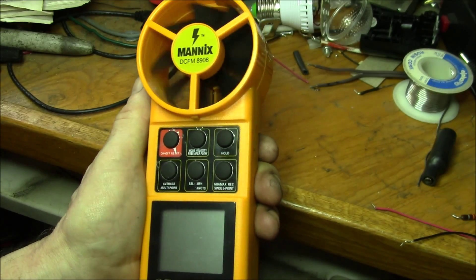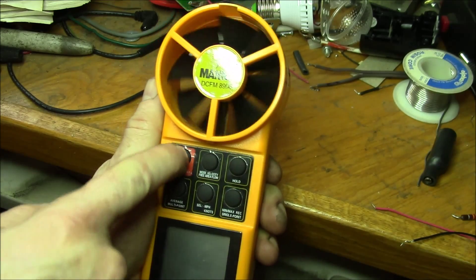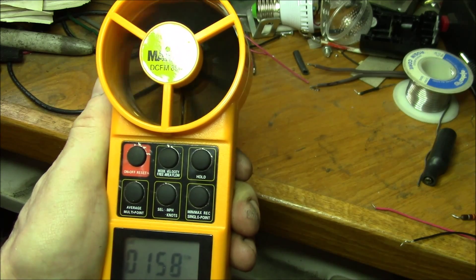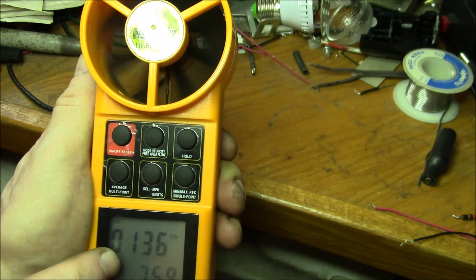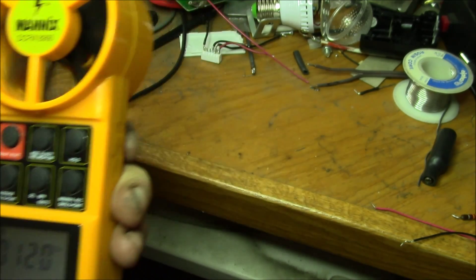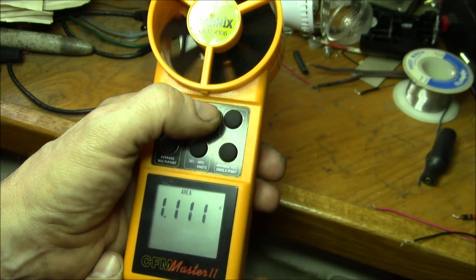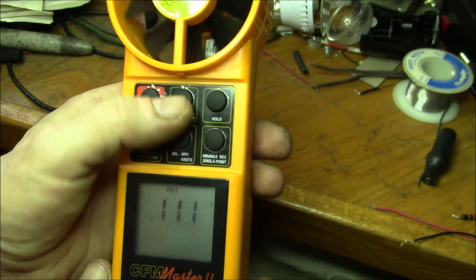There we go, get it all back together and still powers up, fan runs. They have that calibrated in feet per minute, and then you can change that. That's where you can program with this button.